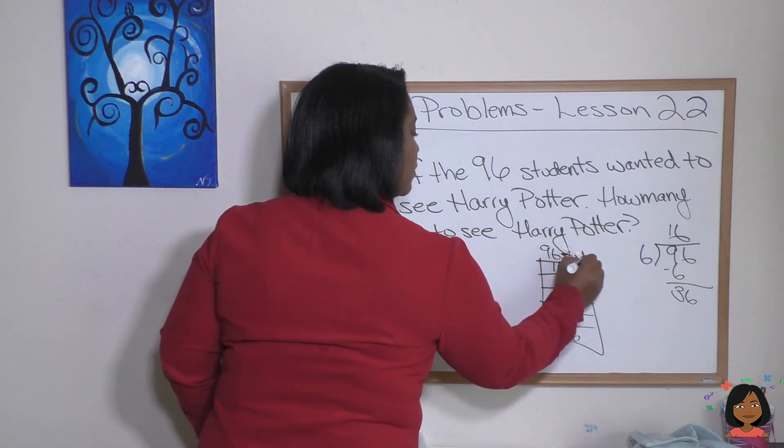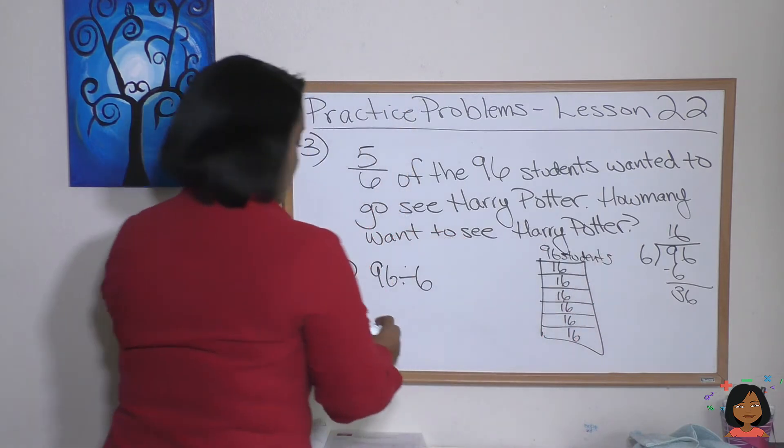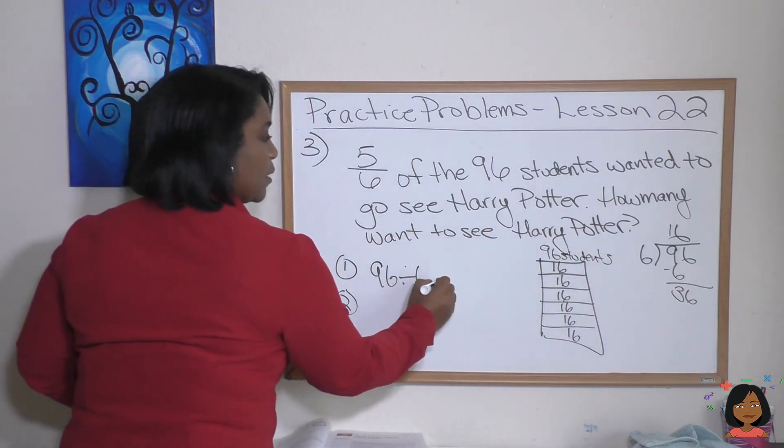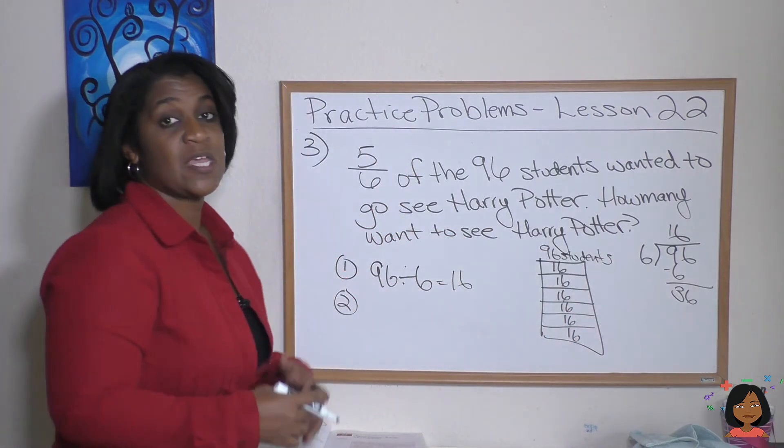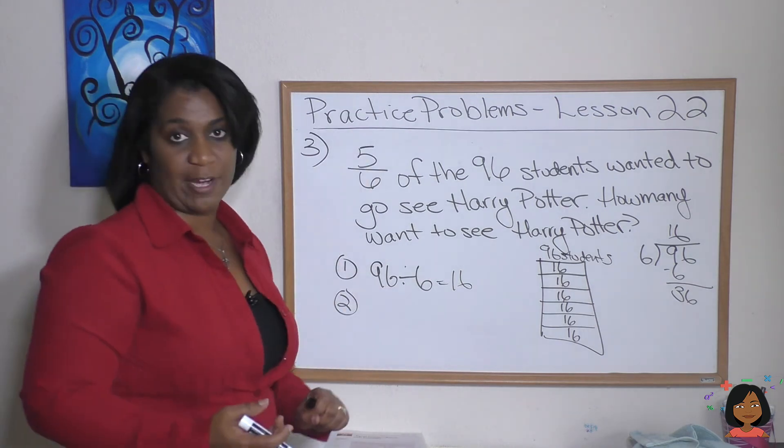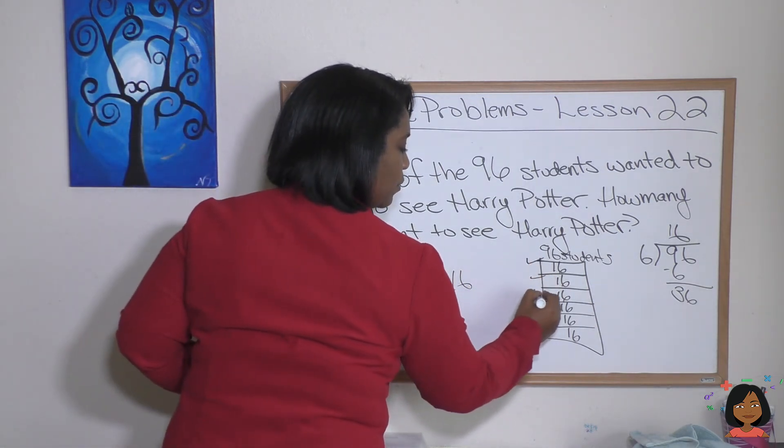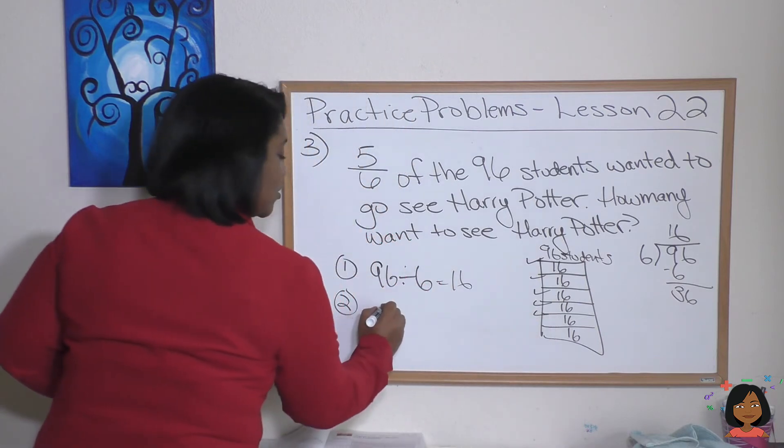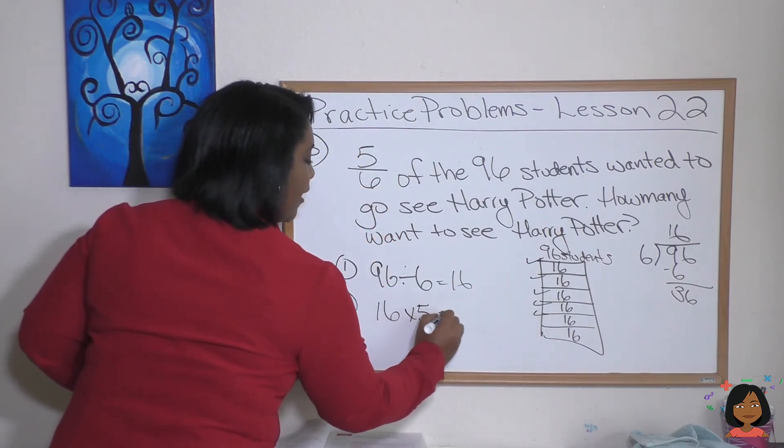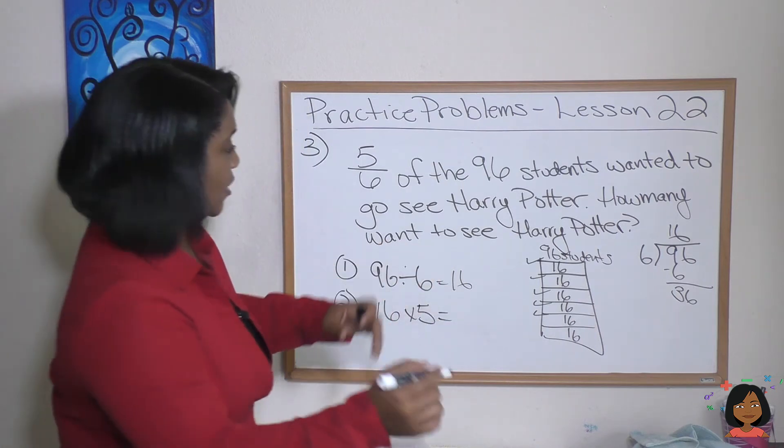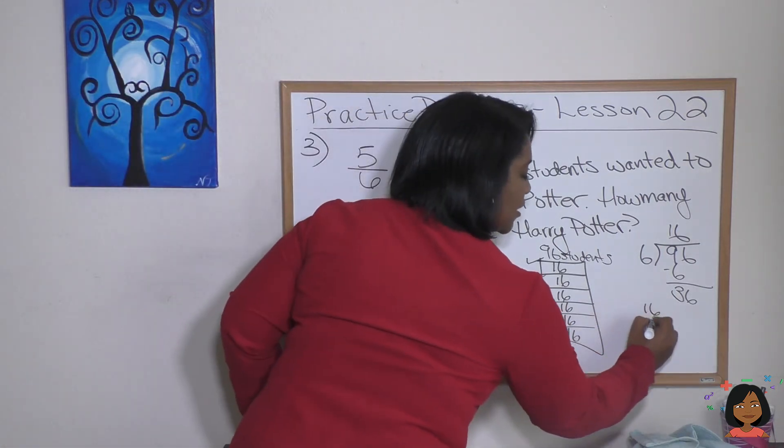Step two is highlight five of my groups for me. Here we go: one, two, three, four, five, which is the same thing as saying 16 times 5 equals, let's do it over here on the side, 16 times 5 is 80. That means that 80 of my 96 students wanted to go see Harry Potter.